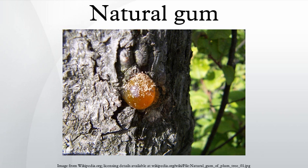Natural gums obtained from non-marine botanical resources that are polyelectrolytes include: gum arabic, from the sap of acacia trees; gum atti, from the sap of Anogeissus trees; gum tragacanth, from the sap of Astragalus shrubs; and karaya gum, from the sap of Sterculia trees.